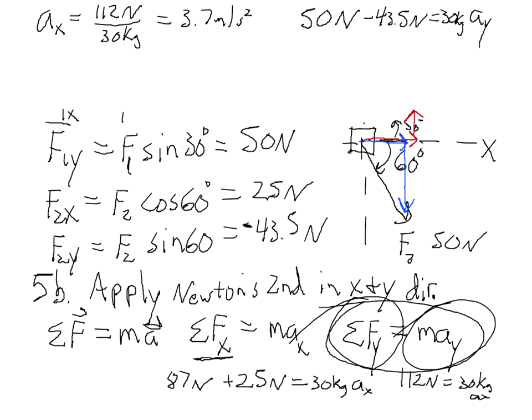You have 50 minus 43 and a half, which is 6 and a half Newtons, equals 30 times AY. So, divide both sides by 30 and you get that AY is 6.5 divided by 30, which gives us 0.22, or to one significant figure, 0.2 meters per second squared.